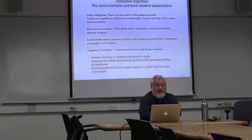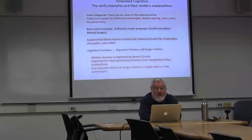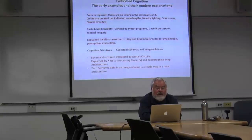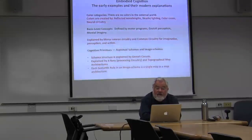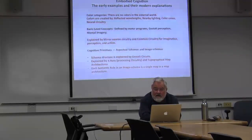Let's look at where embodied cognition came from in the 1970s. First, color categories. Back in 1977, Paul Kay published a remarkable paper. One thing discovered in the neuroscience of color is that there are no colors in the external world — they're not there. Colors are created in four ways: reflected wavelengths from objects, nearby lighting conditions, color cones in the retina, and neural circuitry. Men and women don't necessarily have the same kinds of color cones.